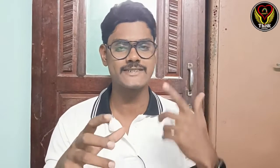Let's look at the details. There are 27 domain subjects — 27 core subjects — including Biotechnology, Political Science, Environmental Science, Home Science, and Business Studies. There are 27 subjects in total.